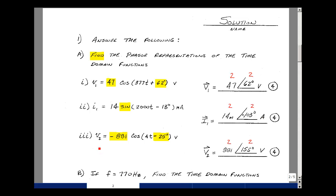The third function was V2 equal to minus 881 times the cosine of 4t minus 25 degrees. Our magnitude doesn't include the minus sign, so we need to do a phase shift to put that minus sign inside — it would be the same as shifting by 180 degrees. 180 degrees minus 25 is 155 degrees; that's the angle. My magnitude is 881, and the units are volts. This is worth four points: two points each for the magnitude and the angle, and then minus one if there are no units.